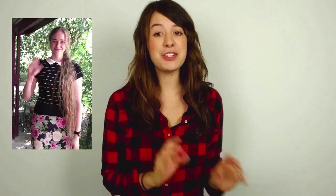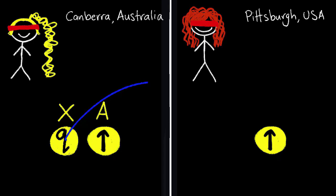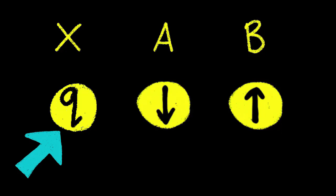For one, quantum information needs to be embedded in a quantum particle. And two, quantum information can't be copied or destroyed. A bit of quantum information is called a qubit. If Toby in Canberra wants to send me a qubit in Pittsburgh, it needs to be embedded in a third particle which we'll call particle X. So now Toby has particle X and the first half of the entangled pair of particles, which we'll call particle A. She wants to send the qubit from particle X to my entangled particle, particle B. She can do this by performing a quantum operation on her particles which, due to the entanglement, makes the qubit from particle X appear on particle B. But because quantum information can't be copied or destroyed, the original qubit on Toby's particle X is now transformed into something else.